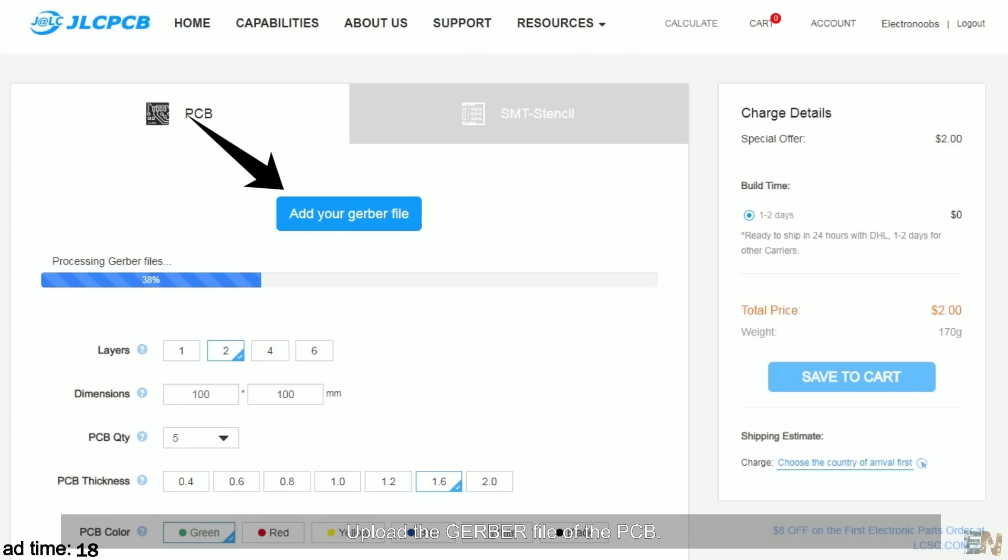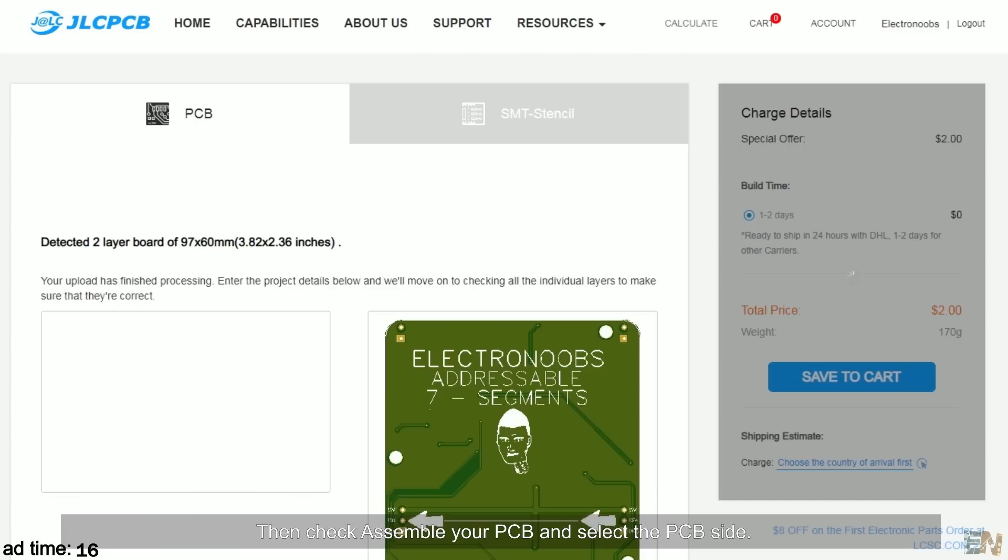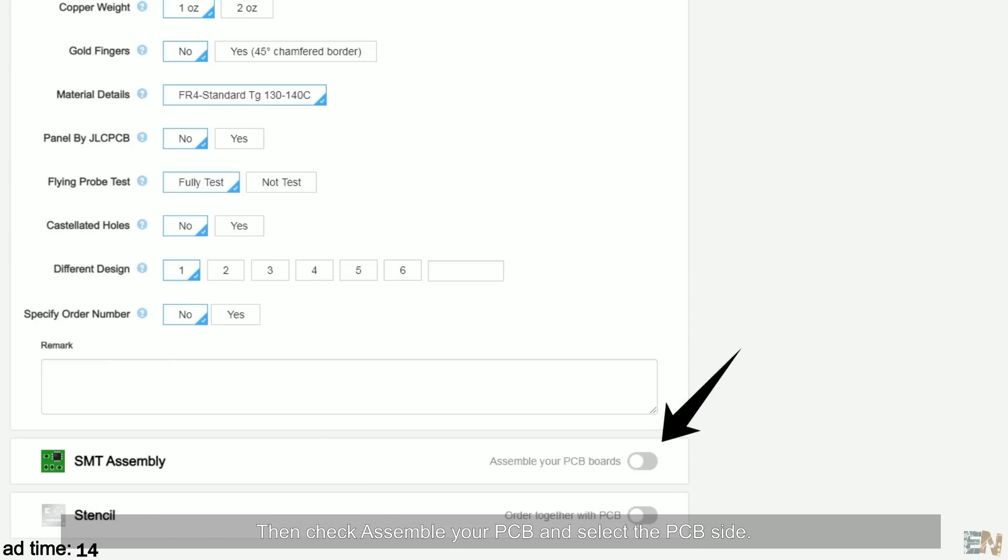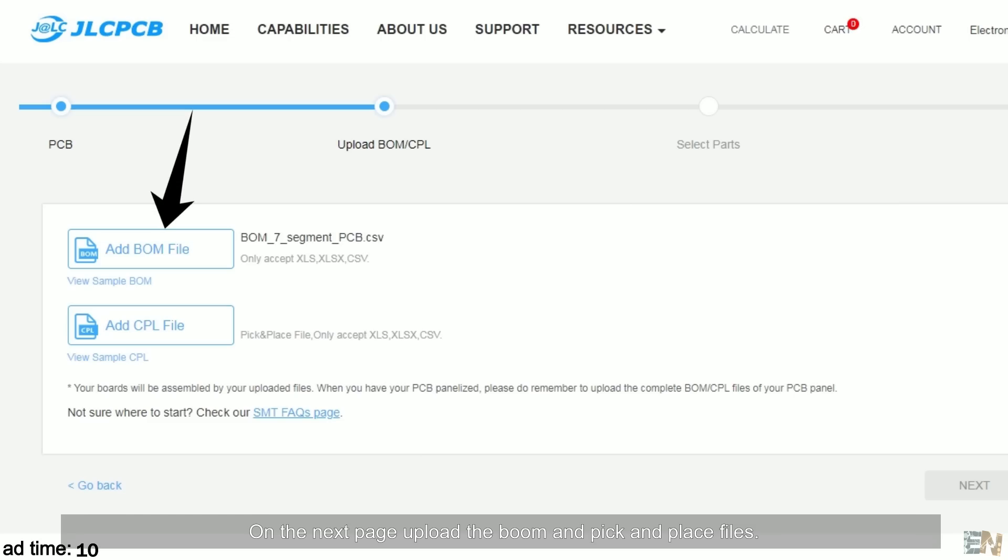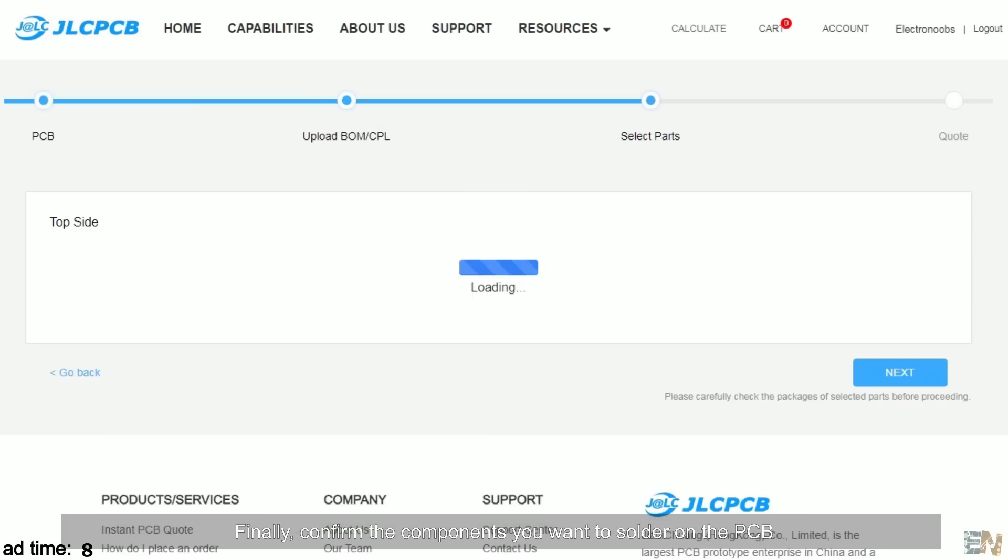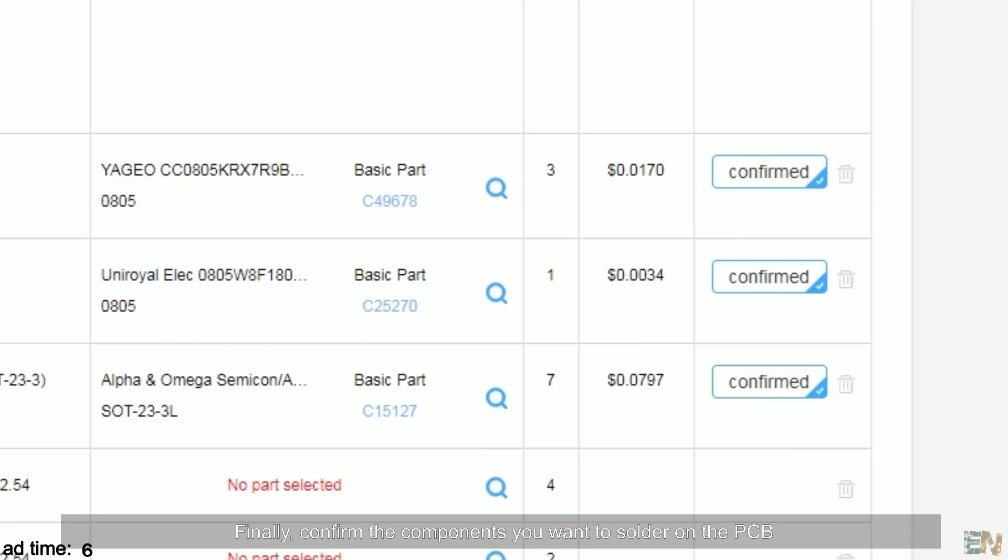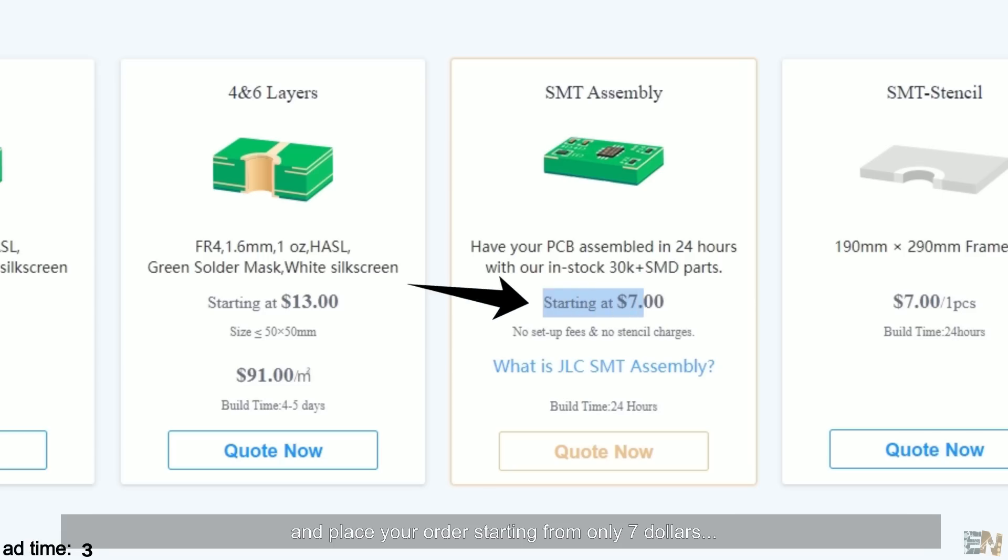Upload the Gerber files of the PCB. Then check assemble your PCB and select the PCB side. On the next page, upload the BOM and the pick and place files. Finally, confirm the components you want to solder on your PCB and place your order starting from only $7.